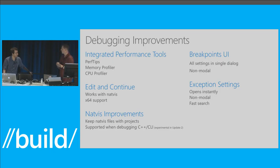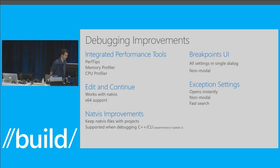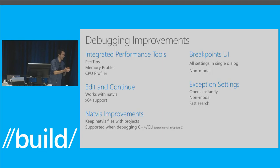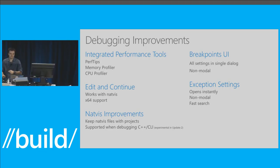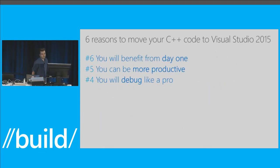That's a quick review of what we talked about: integrated performance tools, PerfTips, memory profiler, CPU profiler, Edit and Continue, NatVis, improved breakpoints UI, exception settings, and read access violation expression reporting. These features all work on remote debugging as well — so they apply to Azure VMs and any operating system you need to test on.